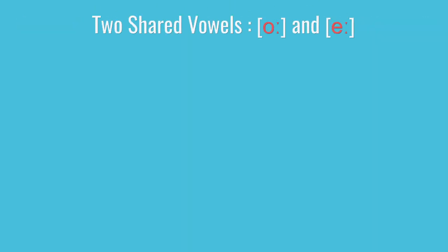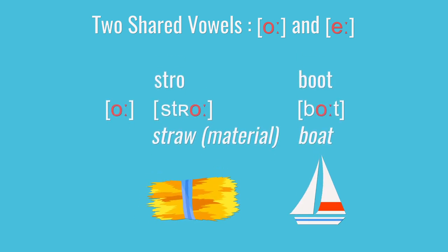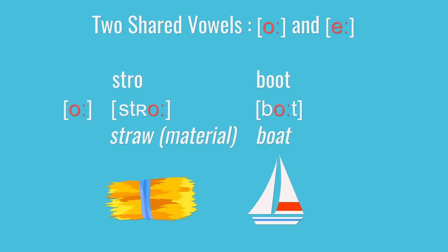Dutch has a couple of gliding vowels that line up really well with English diphthongs. Those would be O as in stro and boat, which is basically the same as English's O as in boat.